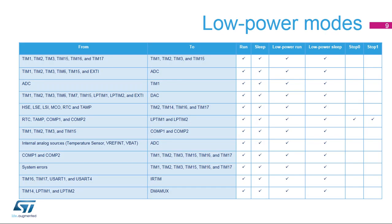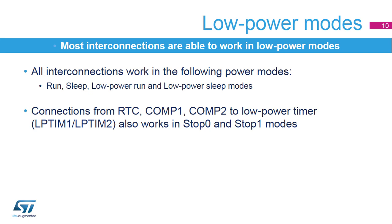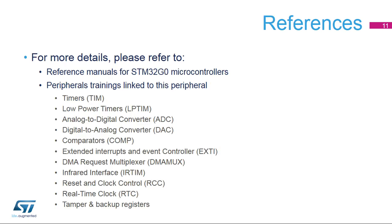Peripherals can be interconnected using the interconnect matrix even when the circuit is in a low-power mode. This table indicates in which low-power modes the interconnection between peripherals remains active. The low-power modes that can be used are run, sleep, and low-power sleep modes for all interconnections. The connections from the real-time clock or comparators to low-power timers can also be used in stop 0 and stop 1 modes. For more details about the interconnect matrix, refer to the reference manual for STM32G0 microcontrollers.